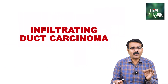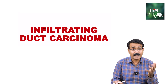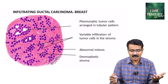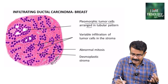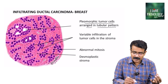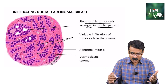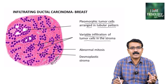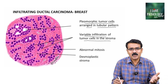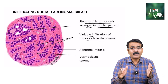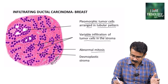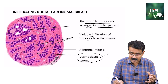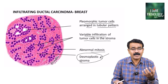Moving on to an important malignancy of the breast: infiltrating ductal carcinoma. As the name says, it is a malignant neoplasm, so the tumor cells are pleomorphic. These pleomorphic tumor cells are predominantly arranged in a tubular pattern. As the grade increases, the tubular pattern becomes solid, with variable infiltration into the stroma. Invasiveness is the feature of malignancy — if pleomorphic tumor epithelial cells infiltrate the stroma, you are looking at infiltrating duct carcinoma. You can find abnormal mitosis and abnormal proliferation of stromal cells, referred to as desmoplastic response or desmoplastic stroma.